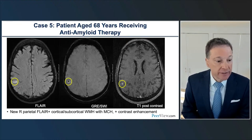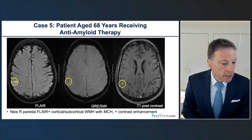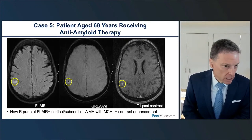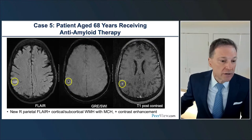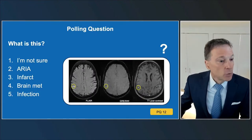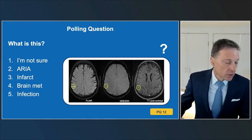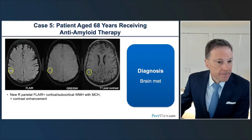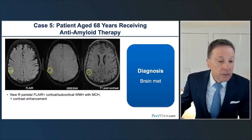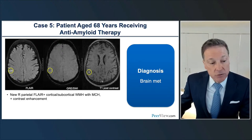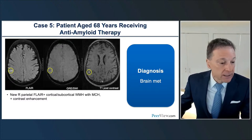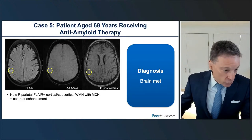Next case: a 68-year-old patient on anti-amyloid therapy coming in for routine surveillance. T2 FLAIR shows a new area of subcortical signal abnormality compared to baseline. GRE scan shows a focus of new lobar microhemorrhage. The patient received gadolinium and there is an associated focus of contrast enhancement corresponding to this finding. The giveaway is the contrast enhancement—this is characteristic of a metastatic focus. ARIA-E and ARIA-H do not demonstrate associated contrast enhancement. ARIA-E is a vasogenic process, not cytotoxic, so you also don't expect restricted diffusion on diffusion-weighted imaging.